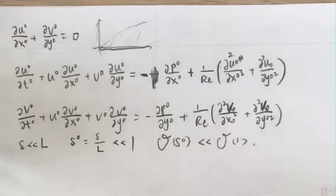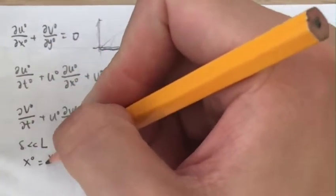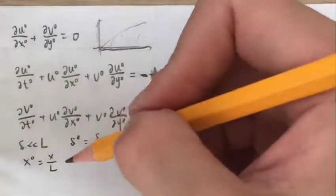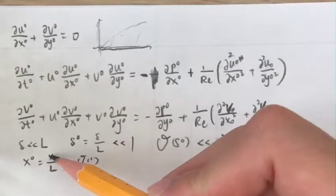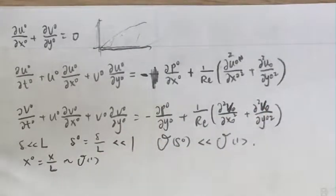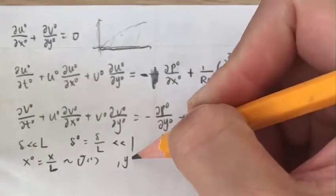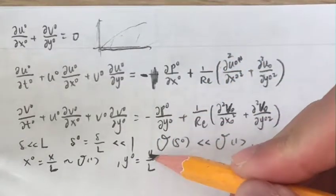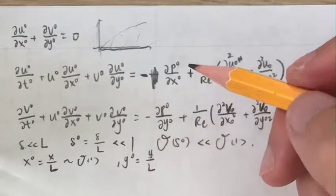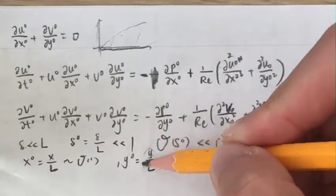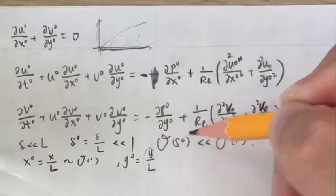Based on this, we can determine the order of magnitude of each term. Let's first say x-naught. x-naught is x over L — we assume this is of order 1, because L depicts the length scale in the x-direction, so the x-coordinate x will have the same order of magnitude as this length scale. But what about y? y-naught equals y over L. Since y lies within the boundary layer, y is the same order of magnitude as delta. So we would expect y-naught to be of the order of delta-naught.